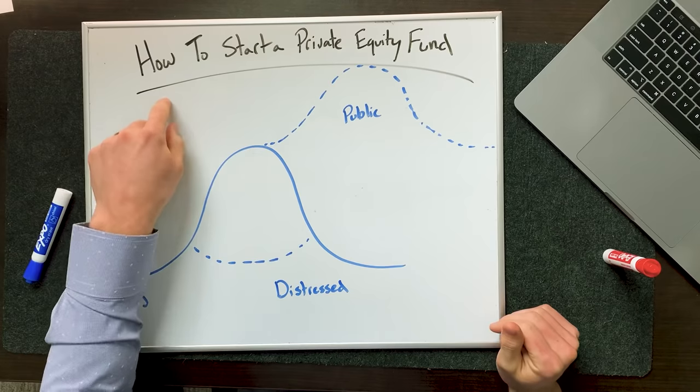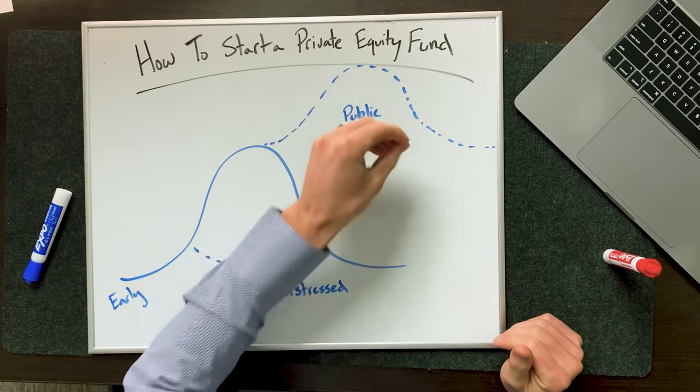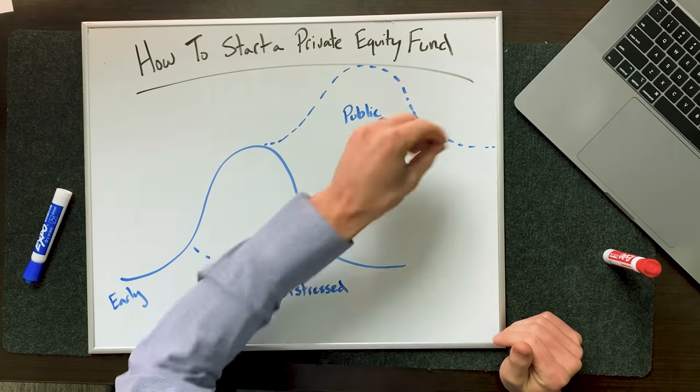Welcome back to the show. Today we're going to talk about how to start a private equity fund. We've had a lot of people ask us about this specifically in private equity. So today's episode we're going to go through all of this: what you can expect when starting a fund, how to structure the entities, how to go out and find investors, how to pitch those investors, how to build a track record, how to build a team. We're going to do all that inside today.